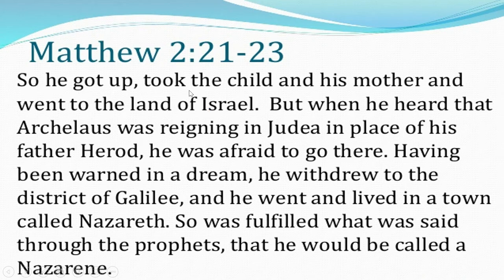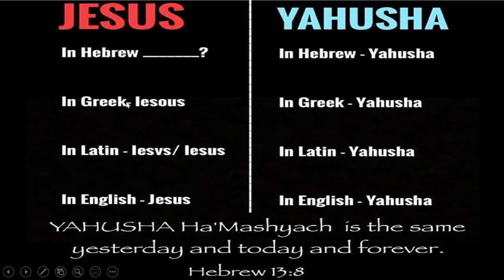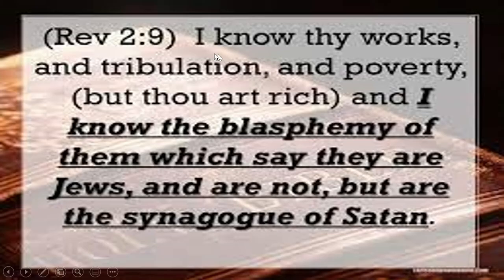Matthew chapter 2 verses 21 to 23 reads: 'Then he arose, took the young child and his mother, and came into the land of Israel. But when he heard that Archelaus was reigning over Judea instead of his father Herod, he was afraid to go there, and being warned by Yahuwah in a dream, he turned aside into the region of Galilee, and dwelt in a city called Nazareth, that it might be fulfilled which was spoken by the prophets: he shall be called a Nazarene.' So the Son of the Most High is not a Greek — he is a Hebrew — and must have a Hebrew name.